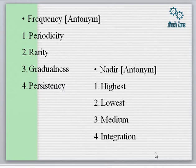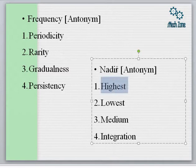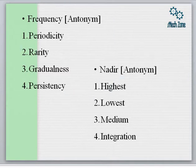Other synonyms of zenith include pinnacle, acme, and apotheosis. Looking at the options given, nadir is actually the lowest point and we have to find its antonym, so the definite answer is 'highest.' What we have to remember is that the antonym of lowest is highest, and nadir simply means the lowest point.